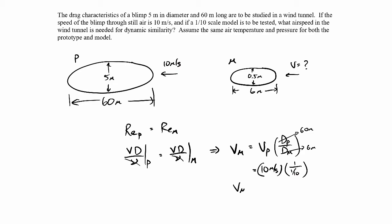So then, when you substitute this in, or actually multiply it out, you'll get that the velocity in the model should be 100 meters per second. So we want to make sure that this speed in the wind tunnel is 100 meters per second.